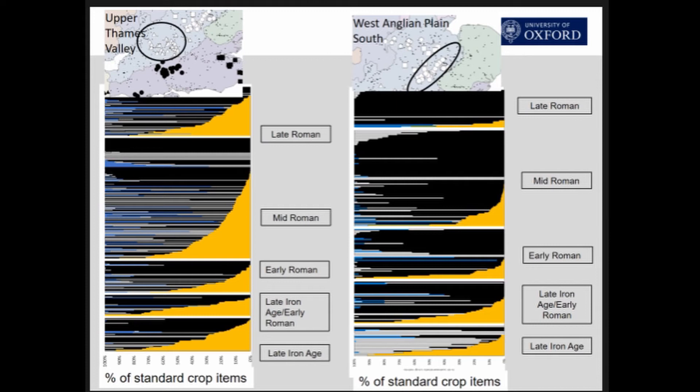If we drill down to sample-level data you can see this more clearly. On the right-hand side we have the east midlands, and by the late Roman period there's an awful lot of blacks — basically a very high reliance on spelt wheat. We have a reasonably clear understanding of how crop choice changes through time in Britain, but we don't have a very good handle on how crop cultivation methods changed and how they relate to different site types or different areas of the country.